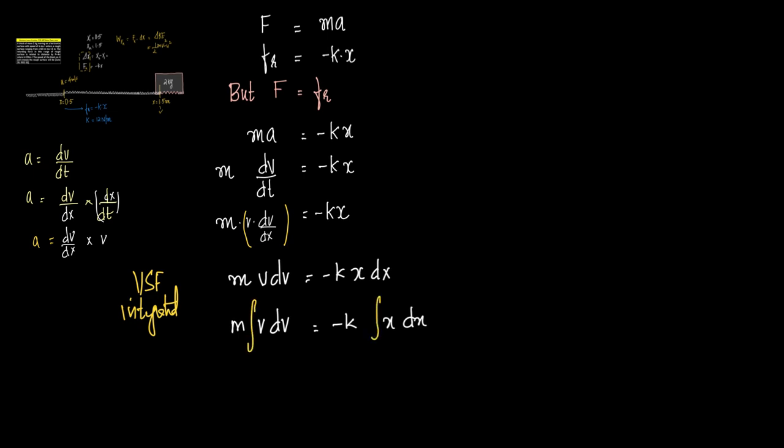And now when we integrate, we need the lower limit and the upper limit. So lower limit for x is very clear here, 0.5, upper limit is 1.5. So this becomes 0.5 to 1.5. And for the velocity, the lower velocity is u to v. u is given to us as 4 meter per second and we have to find out v.